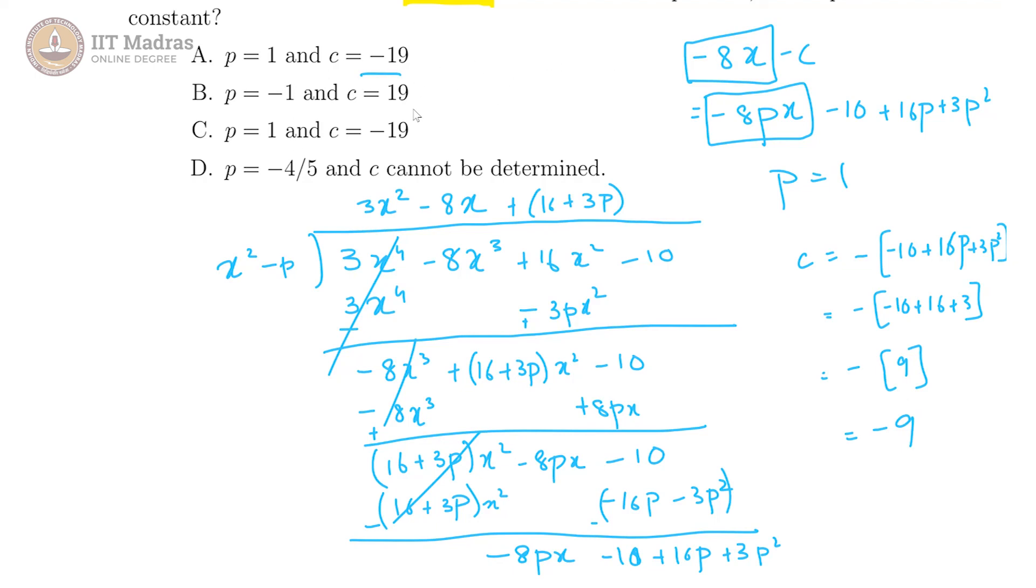This probably was supposed to be minus 9. We observe that option a and option c are in fact the same thing, so one of these was probably supposed to be minus 9. Anyway, so our answer is that p is equal to 1 and c is equal to minus 9.